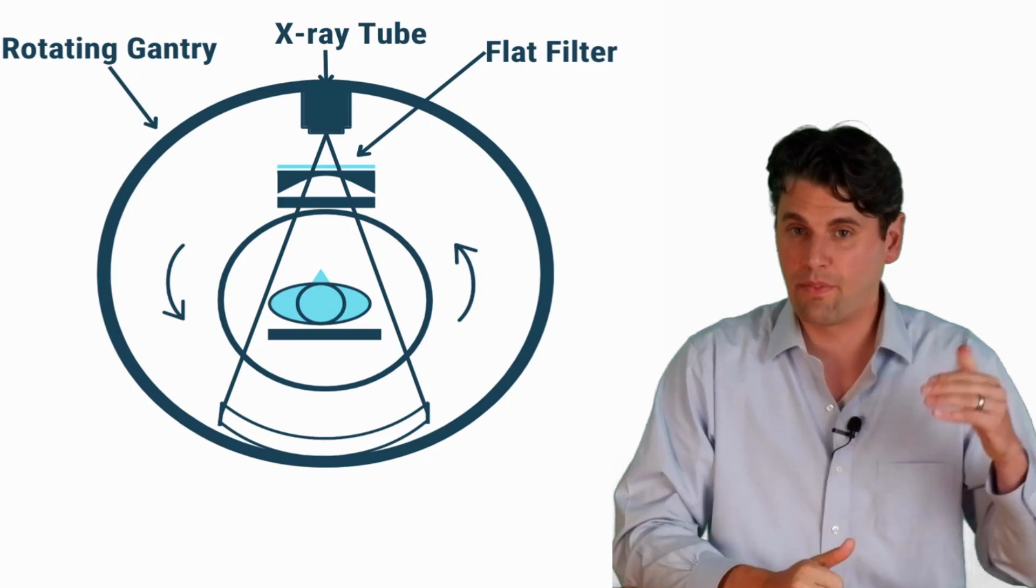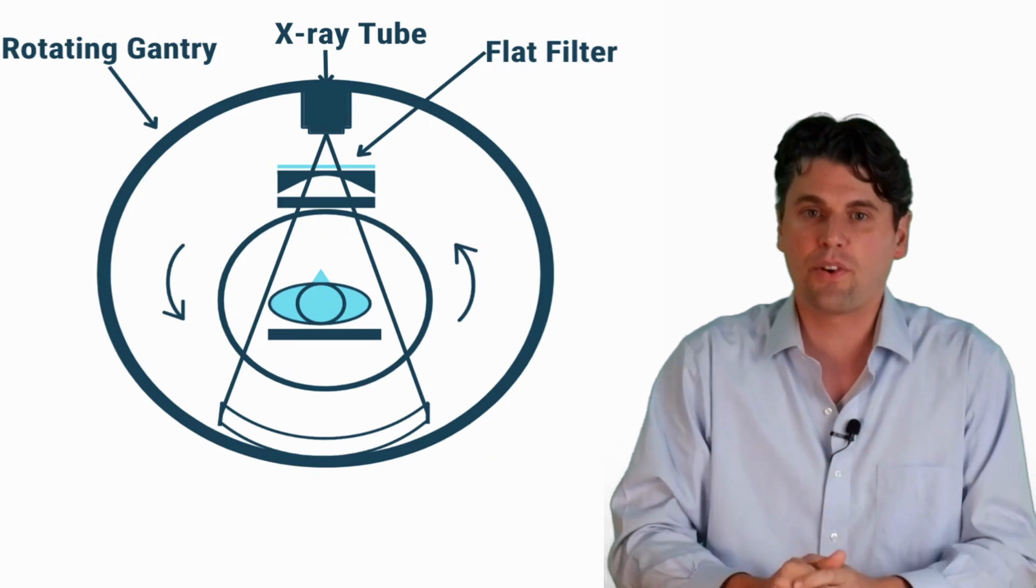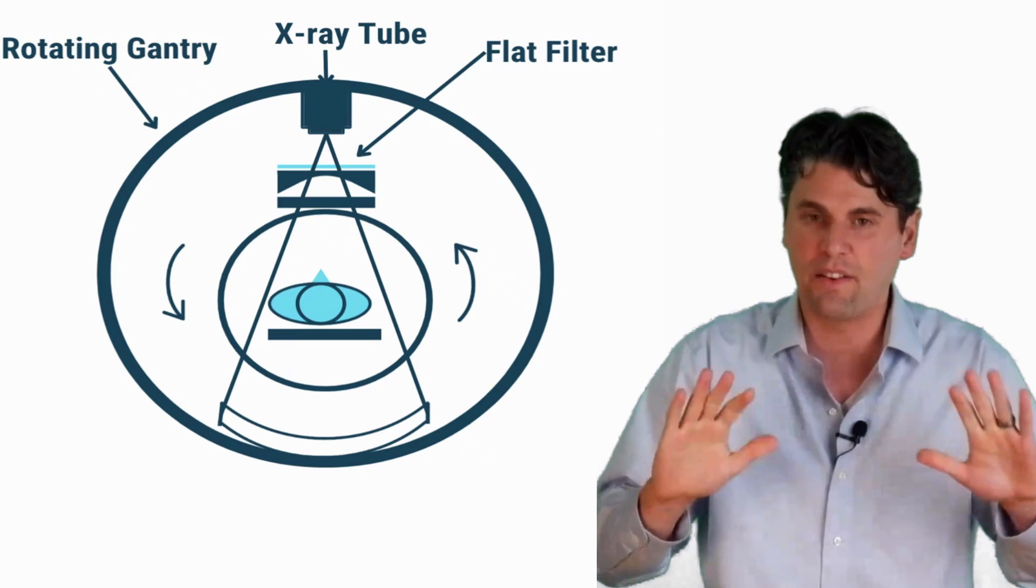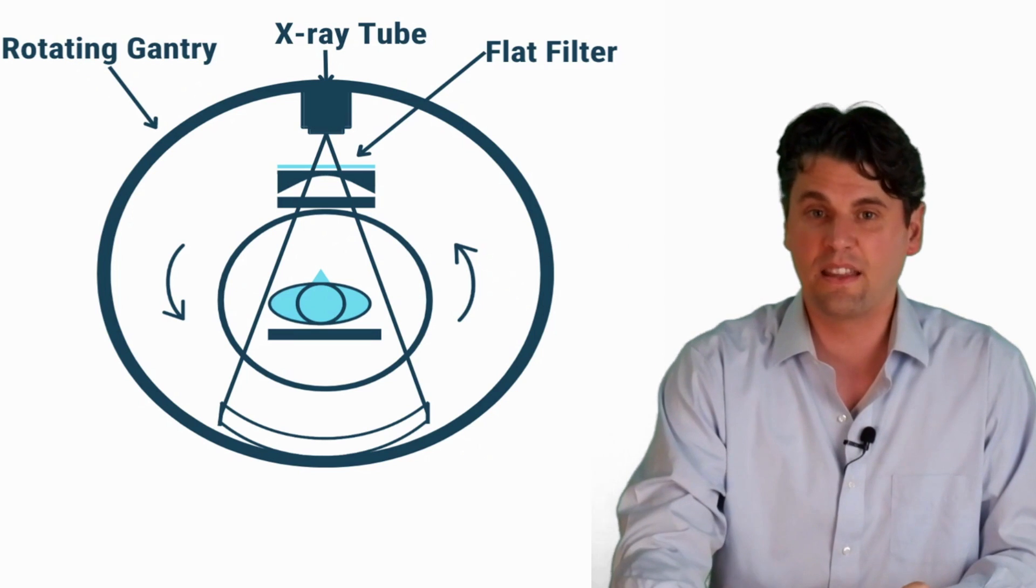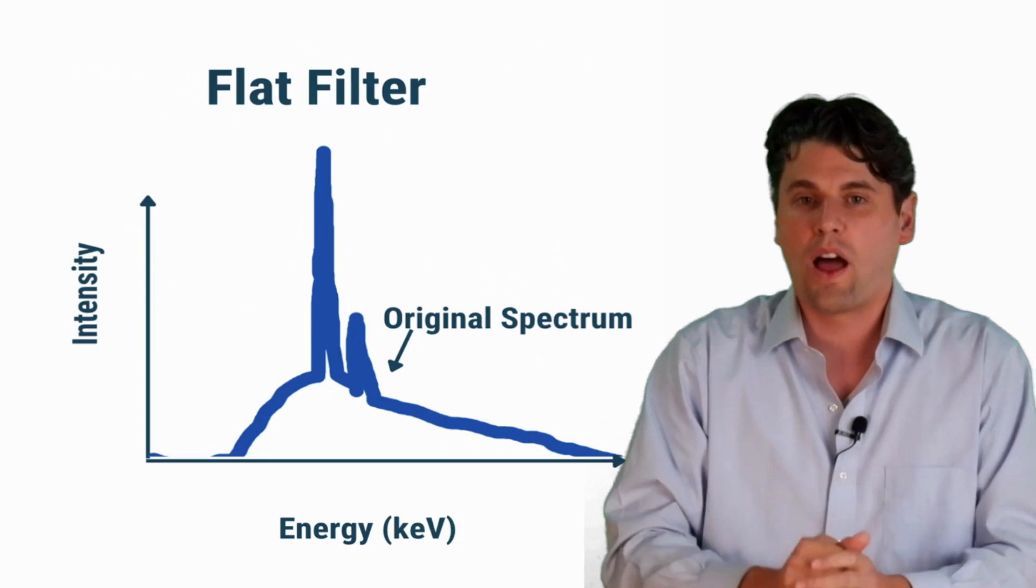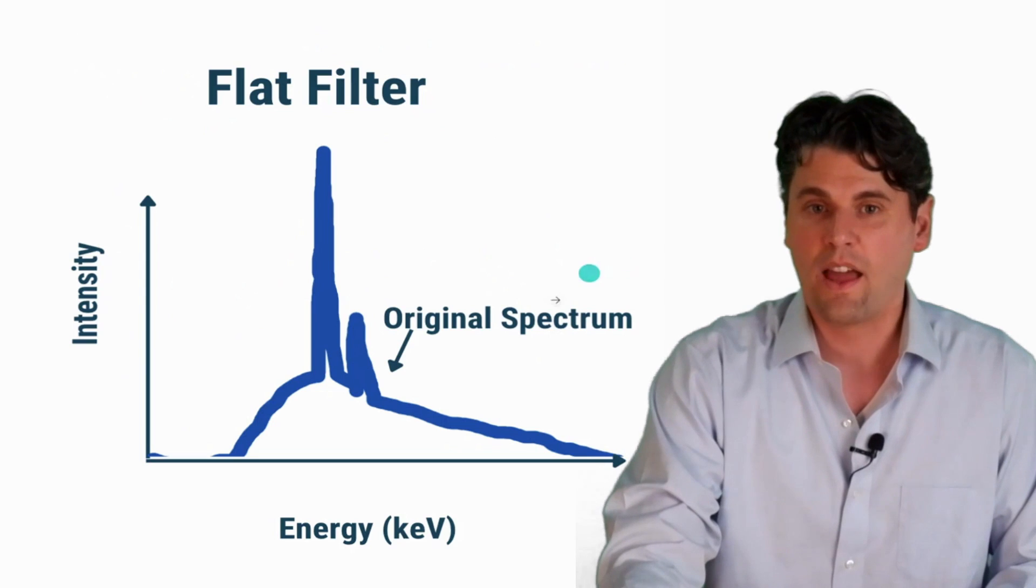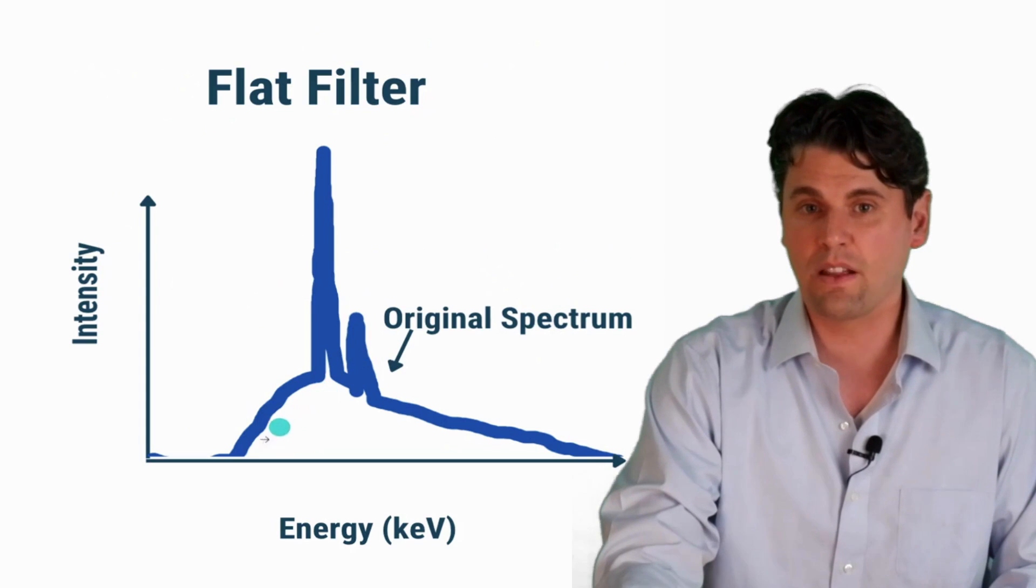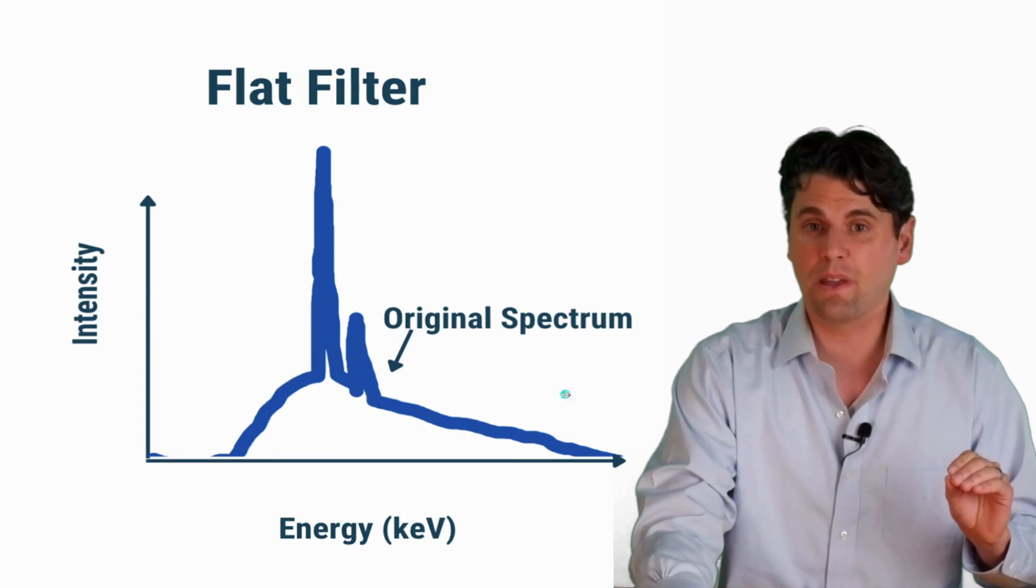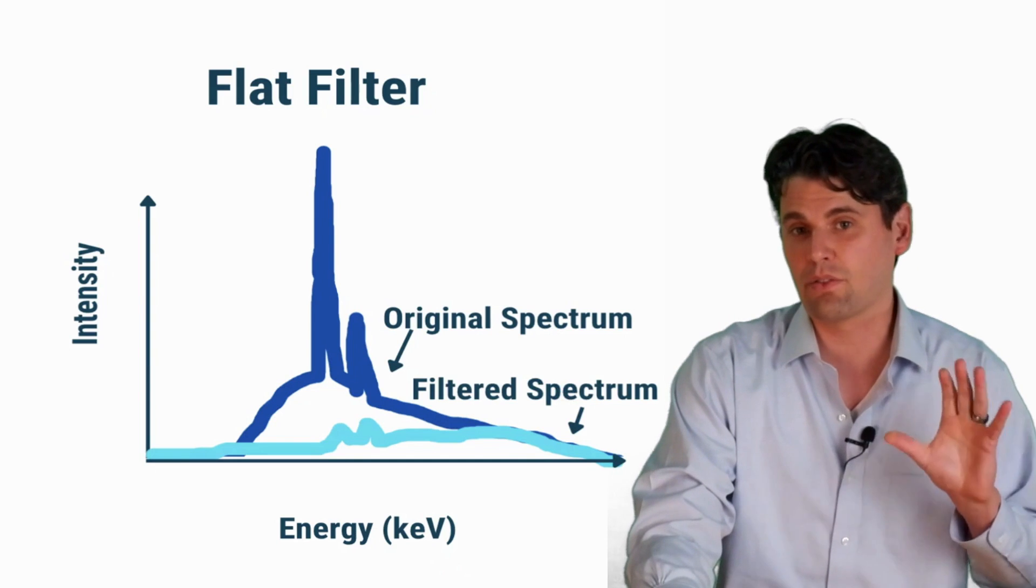After the x-ray tube, there's some filtration. We're going to talk about both flat filters and bow tie filters. So first we're going to talk about flat filters. The idea is actually just a flat piece of metal and that's going to be attenuating the x-rays as they pass through. The x-rays will often talk about a spectrum of x-rays because x-rays are emitted from that x-ray tube not just at one energy but at many energies. A filter will attenuate the beam so there is actually less x-rays that are going to pass through after a filter.